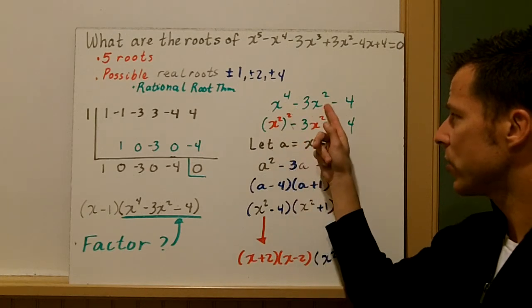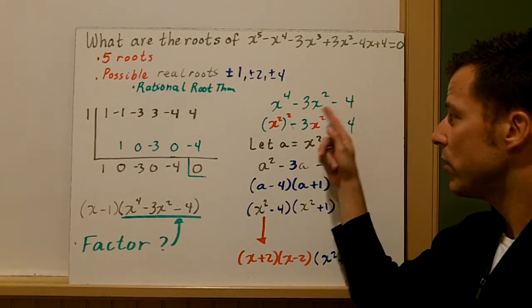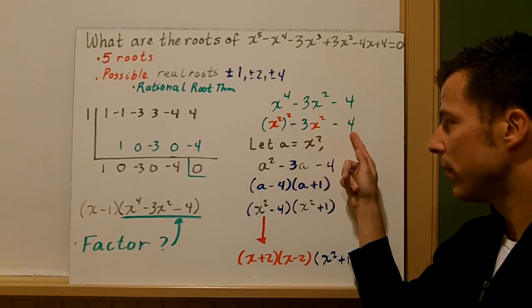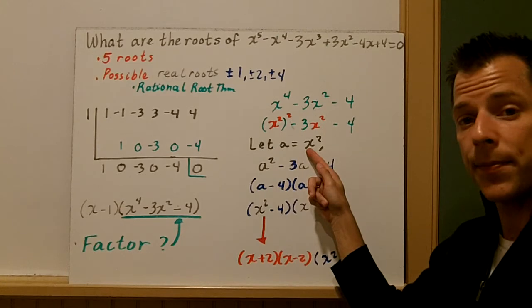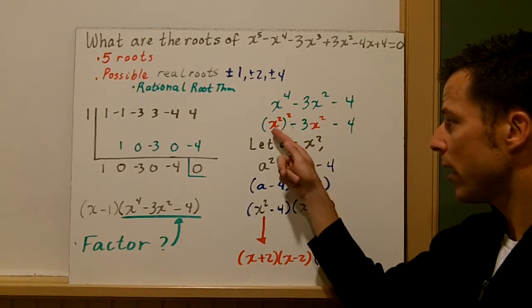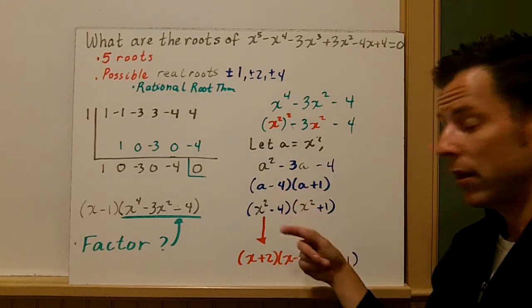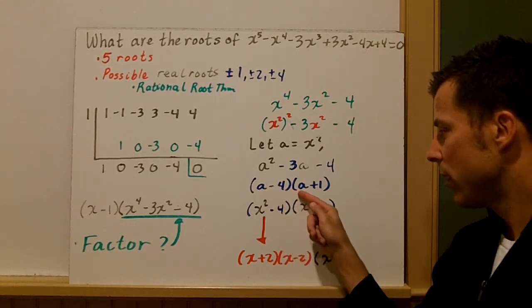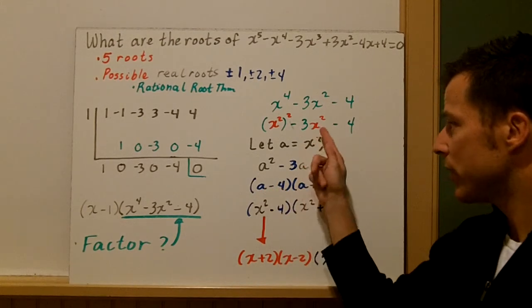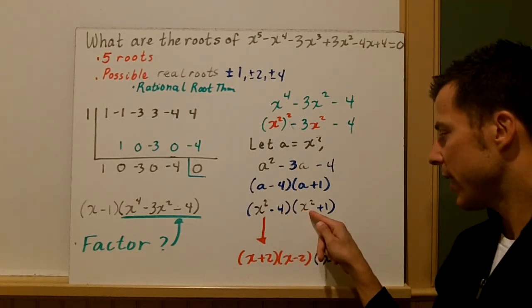So I bring up x^4 - 3x^2 - 4. And we're going to use that pattern we use for when we solve polynomial equations. Look, we can rewrite x^4 as (x^2)^2 - 3x^2 - 4. We let a = x^2. And then we have a^2 - 3a - 4. So we rewrite our quadratic with a. And then do two numbers multiply to be -4 and add to be -3? They do. You have (a - 4) and (a + 1). So I substitute my value for a, which was x^2, back in. So it's actually (x^2 - 4) times (x^2 + 1).